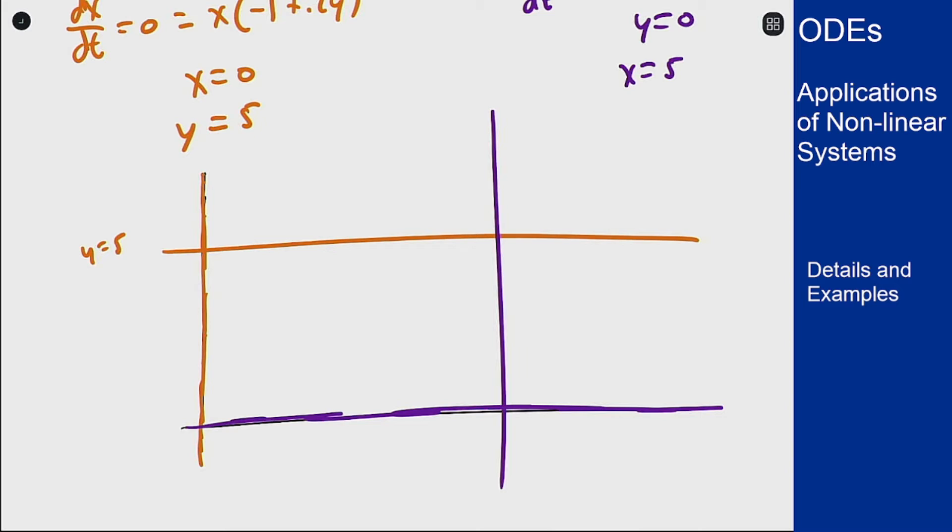Now from this we can see that our equilibrium solutions are where the different colored nullclines cross. So we have one here at (0,0) which we saw before was a saddle, and one here at (5,5) which is our center point.